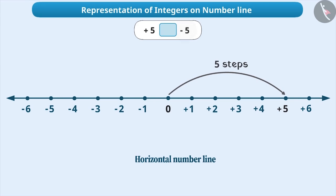Similarly, since minus 5 is a negative integer, move 5 points to the left of 0.